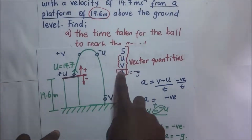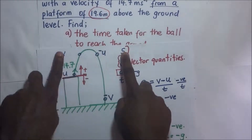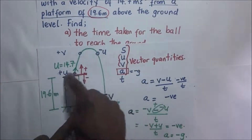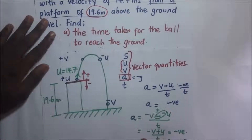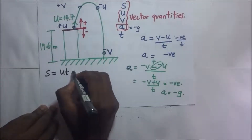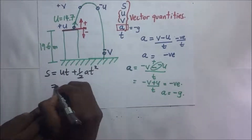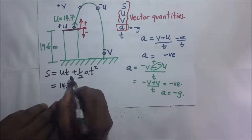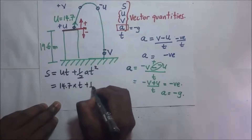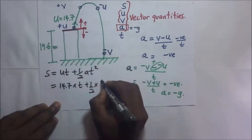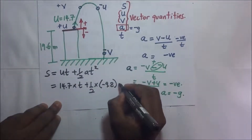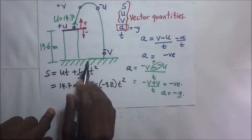Now let's answer the question. Using the equation of motion: s = ut + ½at². The initial velocity u is positive 14.7 m/s (moving upward), so we have 14.7t. The acceleration is negative 9.8 m/s², so we add ½ × (−9.8) × t².